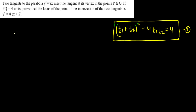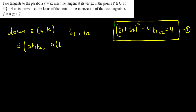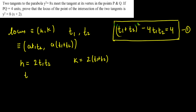Now let's work on the locus. The locus point is h, k. We should remember that the point of intersection of the two tangents drawn at t₁ and t₂ on a parabola is given by (at₁t₂, a(t₁ + t₂)). This is a very important result. Comparing with h and k, since a = 2, we get h = 2t₁t₂ and k = 2(t₁ + t₂). Therefore, t₁t₂ = h/2 and t₁ + t₂ = k/2.